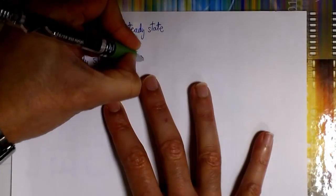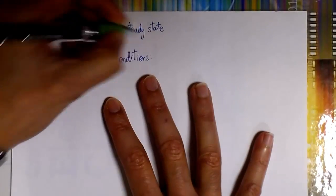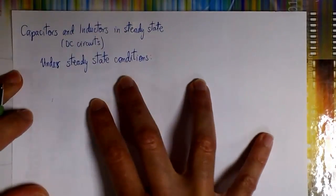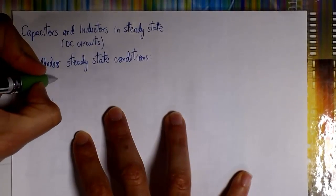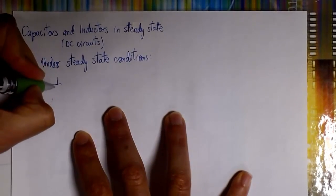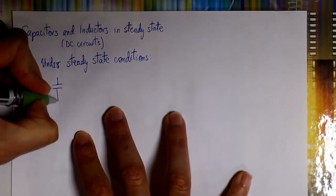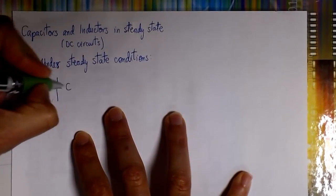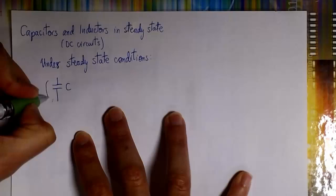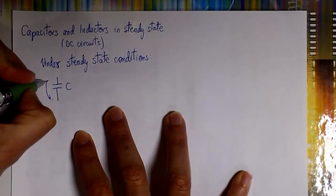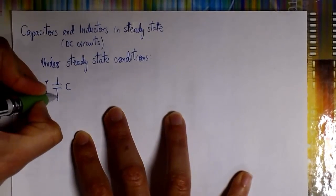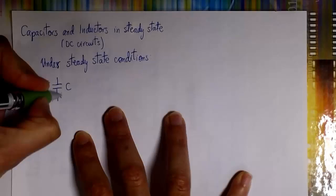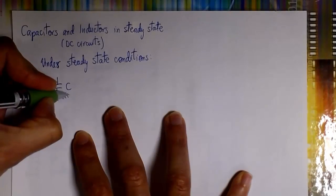Hello. In this video we will talk about capacitors and inductors in a steady state in DC circuits. What we have is a capacitor or an inductor connected in a circuit with a source providing a constant voltage or a constant current.